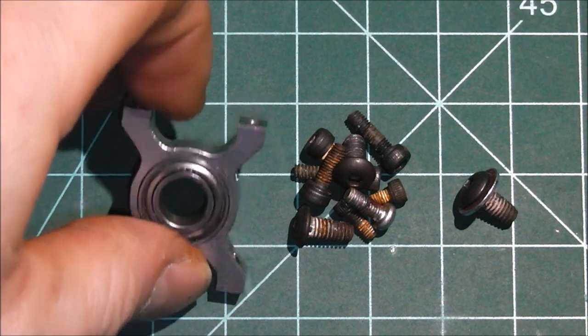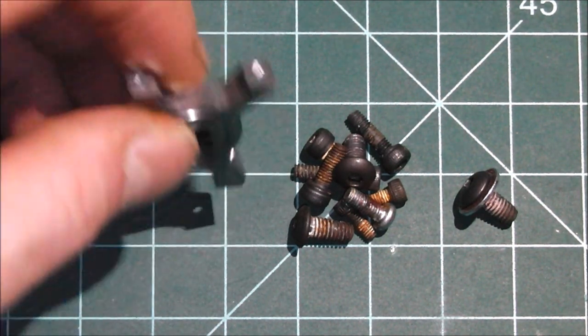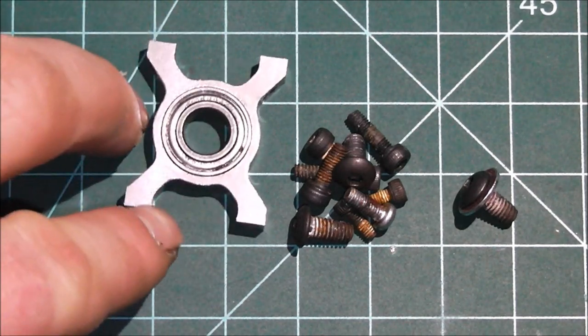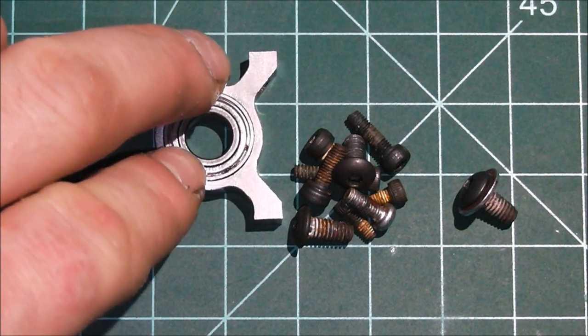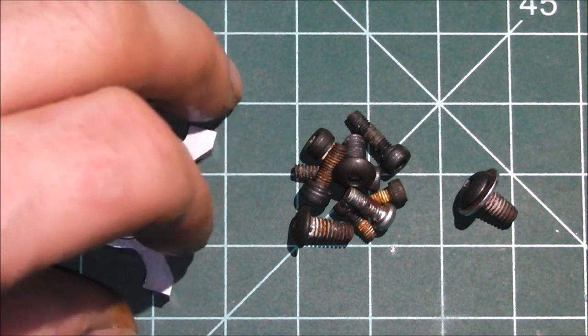I'm also going to go over how to get the Loctite out of the threads, in between threads, and I'm also going to talk about how to get the green Loctite out so that you can remove bearings from bearing blocks that were green Loctited in like this one was.